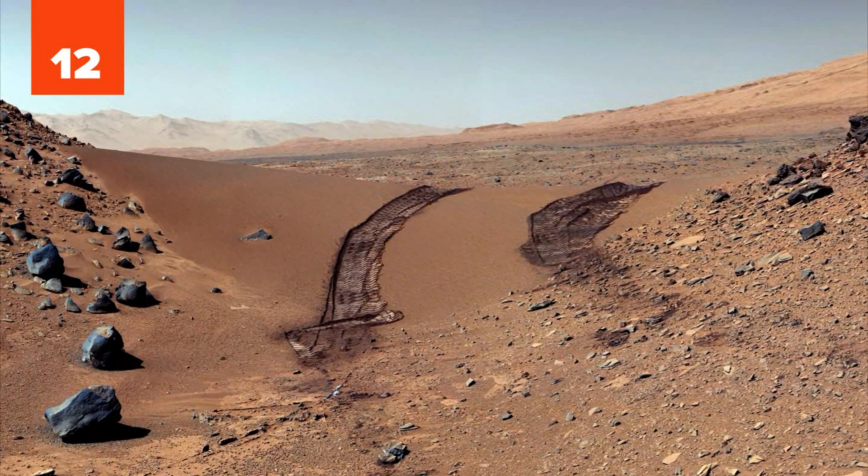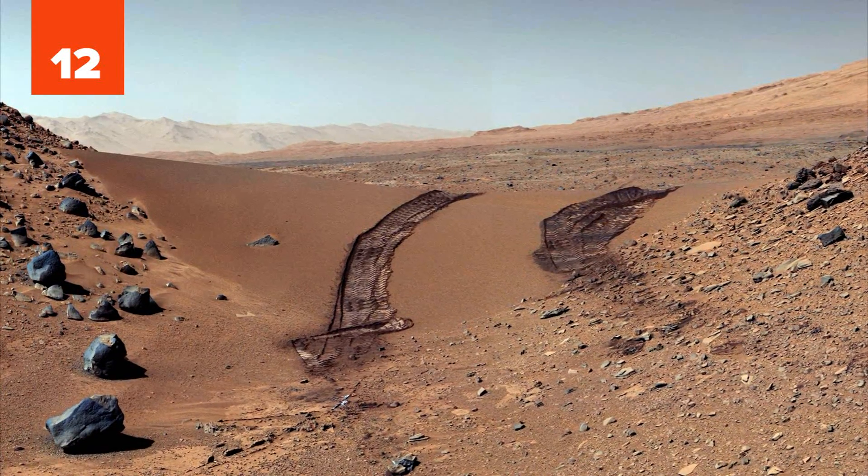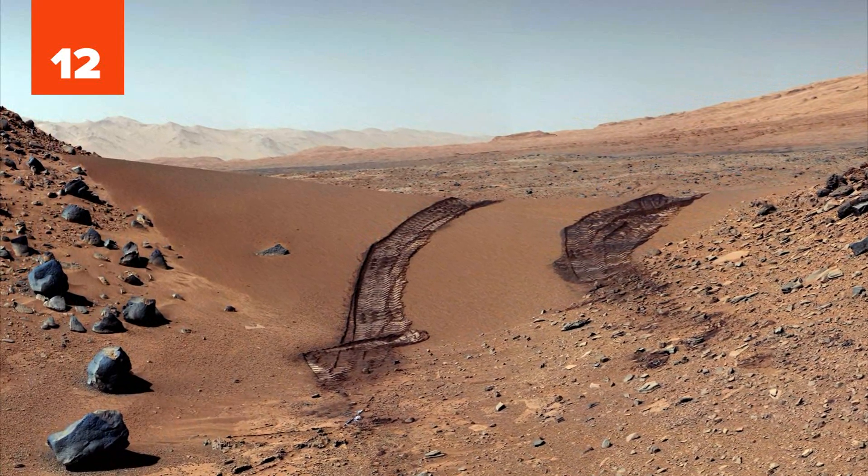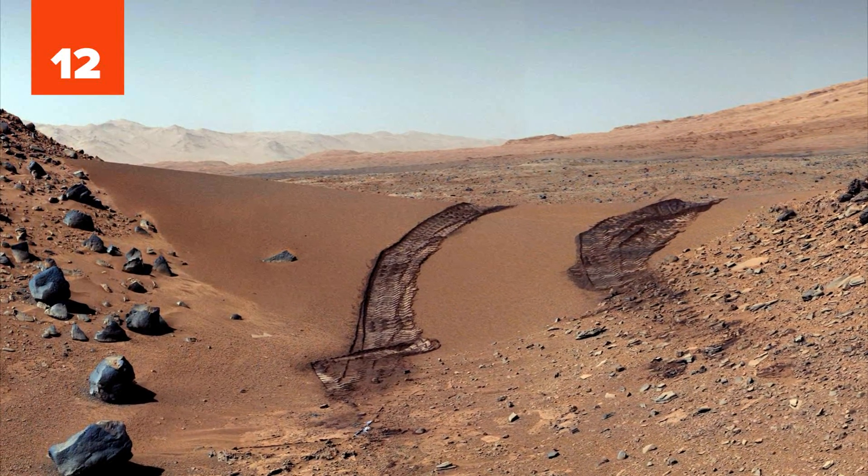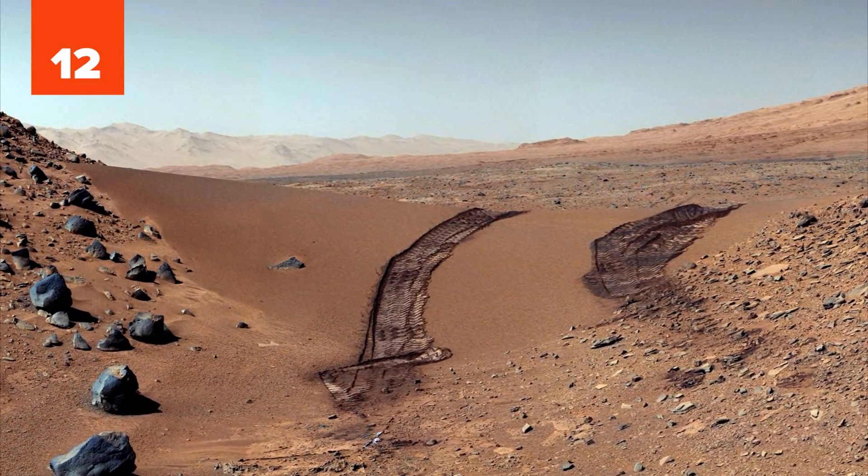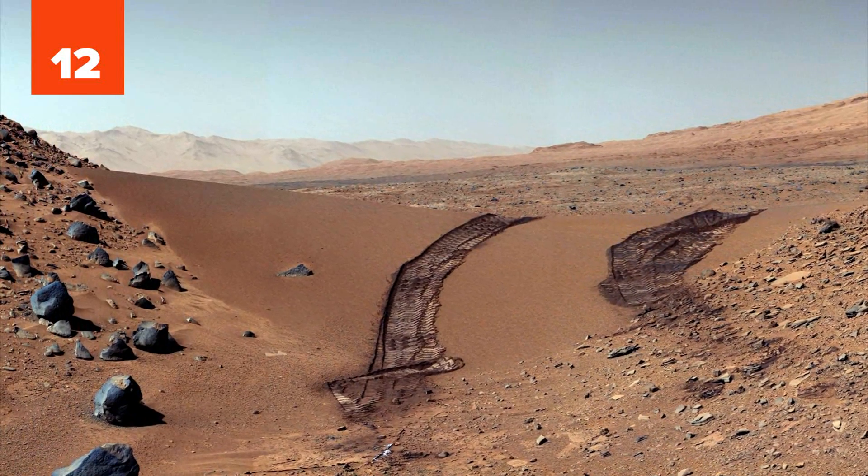What we don't know and are trying to understand is why the red planet became so dry and inhospitable. Theories range from an asteroid impact blowing most of the atmosphere into space in a catastrophic event or solar wind erosion.